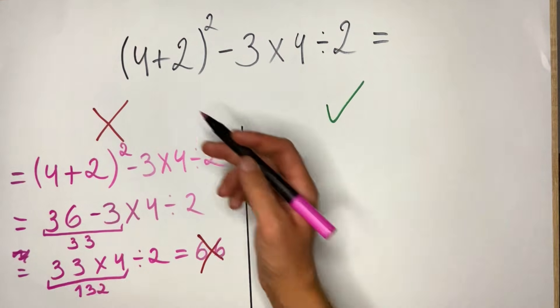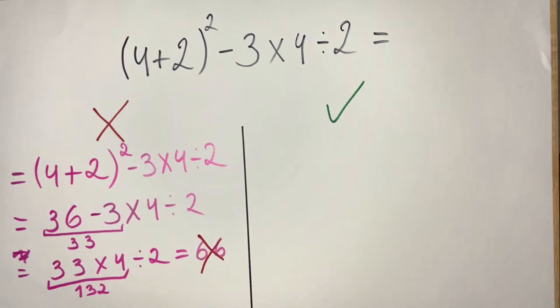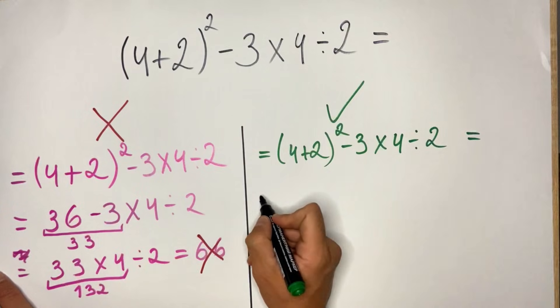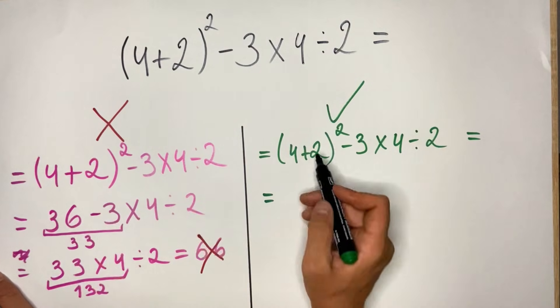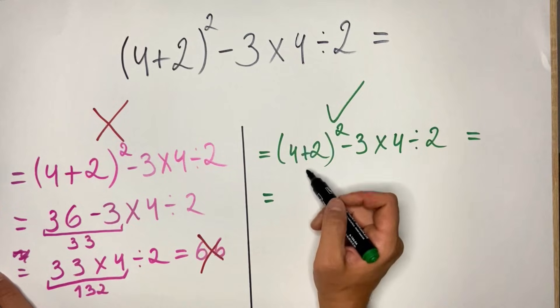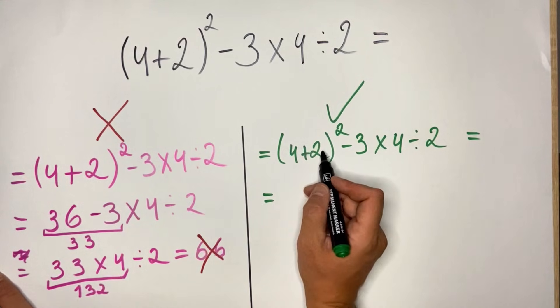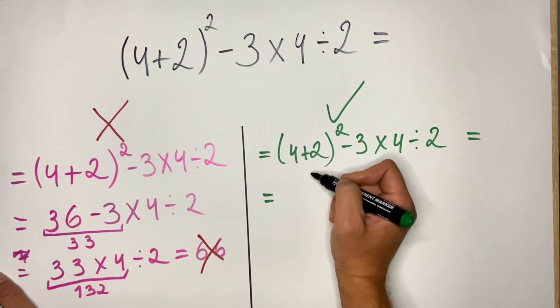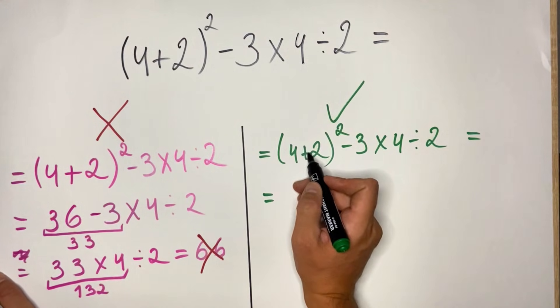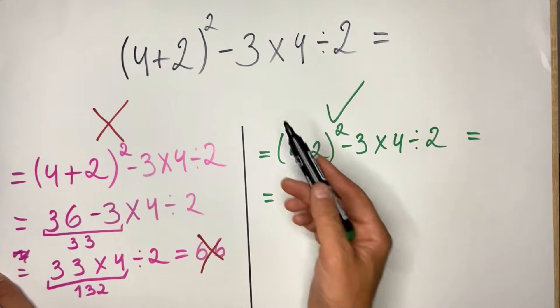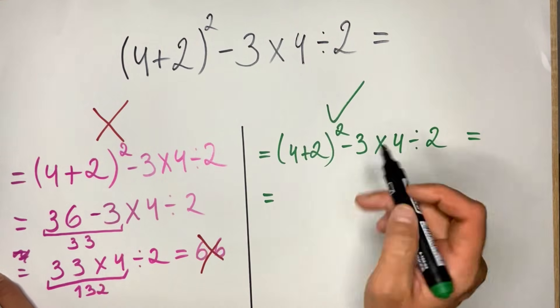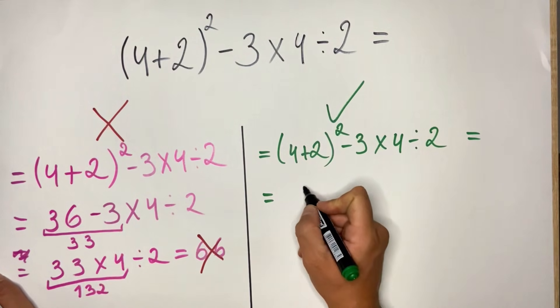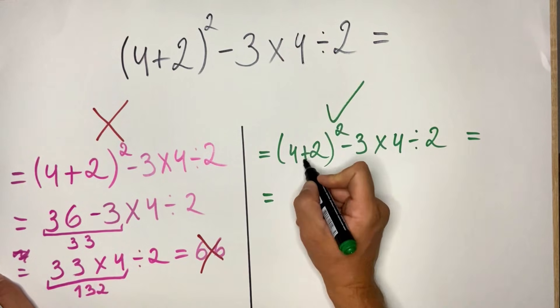What everyone should do is really follow the order of operations. We do whatever is in parentheses first. In this case we have 4 plus 2. It can be one, two, or three parentheses; you always do first what's inside. We have 6 squared, so 4 plus 2 is 6, and 6 squared is 36.